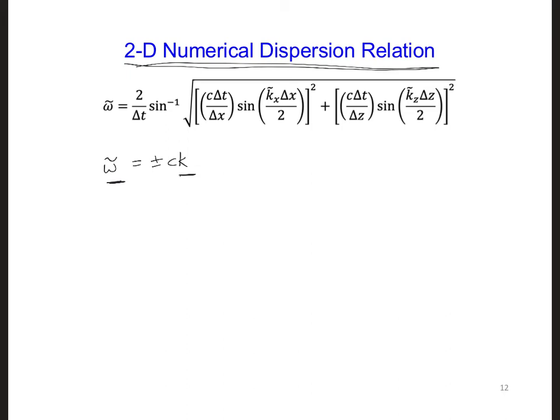Also, as for the one-dimensional case, we can see that in this expression for the numerical angular frequency, we can run into trouble if we have to take the arc sine of a quantity that is greater than one or less than minus one. Since we would then wind up with a complex number for the omega tilde.